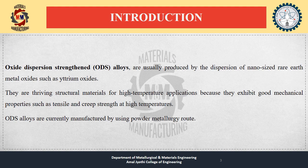Introduction: Oxide Dispersion Strengthened Alloys. Oxide Dispersion Strengthening is a process used to improve the strength and ductility of materials, particularly metals, by dispersing nanoparticles of oxide throughout the material. This is typically done by adding a small amount of oxide to the material and then using mechanical processing techniques such as rolling or forging to disperse the oxide particles throughout the material.